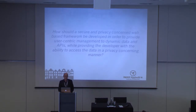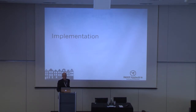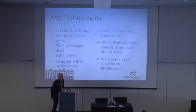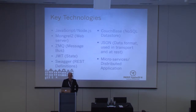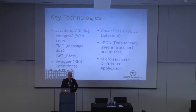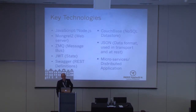In terms of implementation, the challenge is how to develop a secure, privacy-concerned web framework to provide user-centric management of dynamic data and APIs, while also giving developers the ability to access data in a privacy-preserving manner. Our implementation takes a microservices architecture approach. Some of the technologies we're using are Node.js, Mongrel 2, ZeroMQ, JWT, Swagger for REST definitions, CouchDB as a NoSQL database, and JSON as a data format used in transport and at REST.